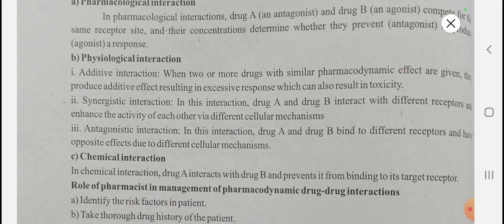The next type is chemical interaction. In chemical interaction, drug A interacts with drug B and prevents it from binding to its target receptor.